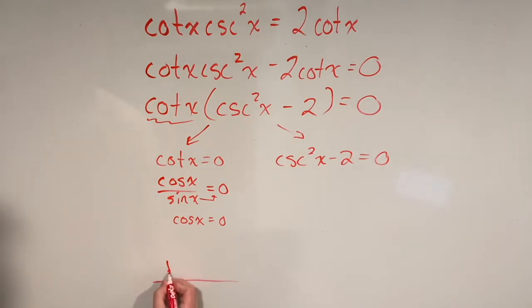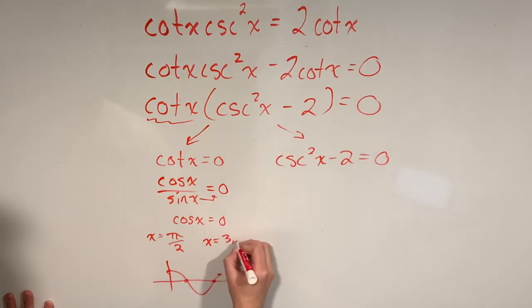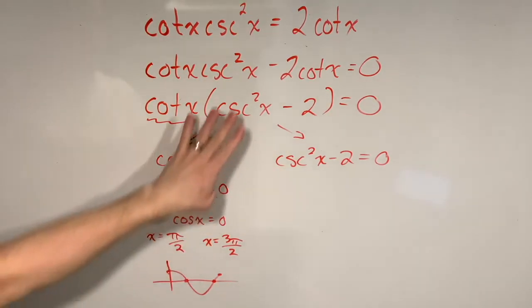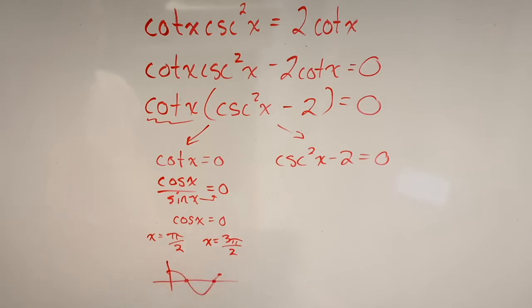We know the cosine function starts at one and ends at one, but the values that are going to make cosine of x equal to zero are going to be pi over two, that's this guy right here, and three pi over two, which is this guy right here. So we've got two solutions to this trigonometric equation just from this little branch over here, pi over two and three pi over two.